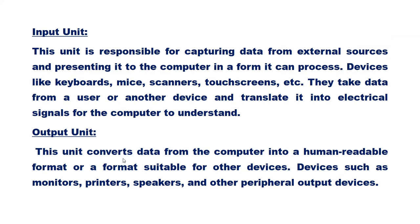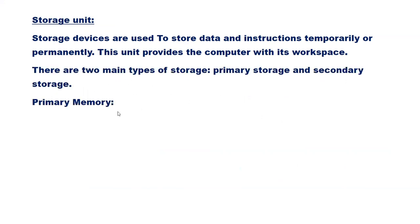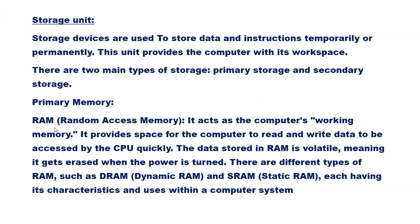The output unit converts data from the computer into a human-readable format or a format suitable for other devices. Monitors, printers, speakers, and other peripheral output devices make up the output unit. Storage devices are used to store data and instructions temporarily or permanently, providing the computer with its workspace. Primary storage consists of RAM, which acts as the computer's working memory, providing space for the CPU to quickly read and write data; it is volatile and erased when power is turned off. Types of RAM include DRAM and SRAM, each with its own characteristics.